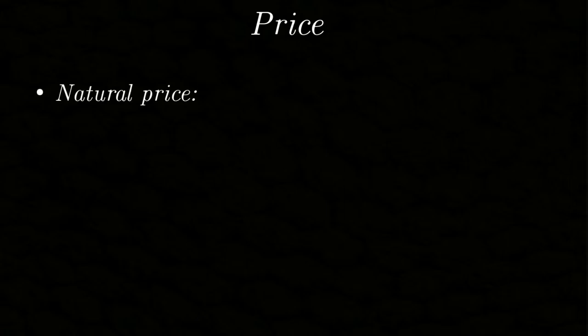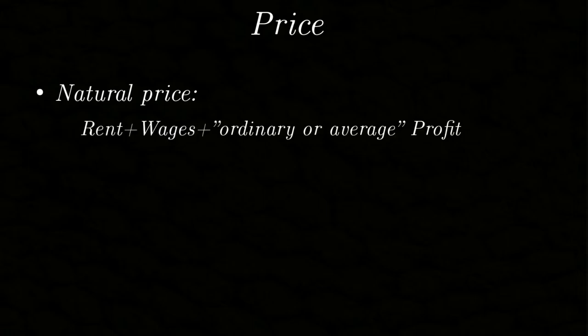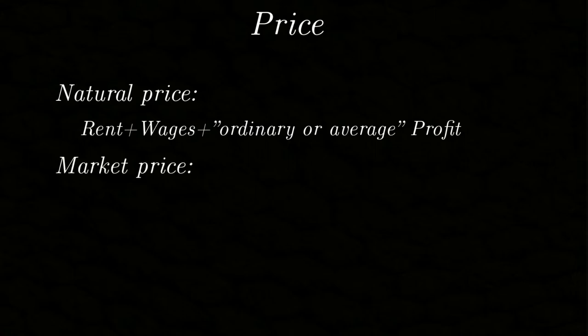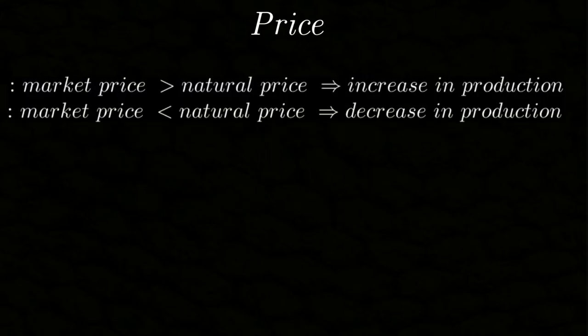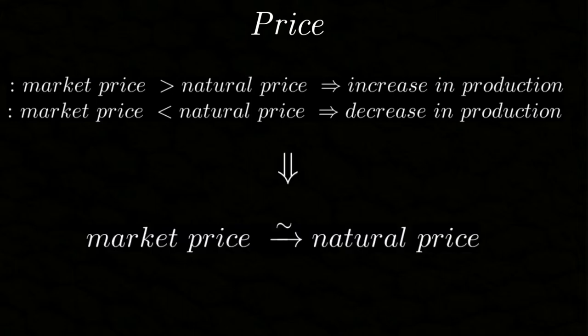Smith distinguishes between two different kinds of prices. Natural price, which decomposes the price of a product into three components: the materials needed, the rent for the working place, the wages of the workers, and an average or ordinary profit. And market price, which is determined by the law of supply and demand. The important point is this: if the market price is larger than the natural price, then a lot of profit is to be made, and it will attract a lot of entrepreneurs who will increase the supply. While if the market price is smaller than the natural price, factories will close down and supply will diminish. So the market price will over time converge towards the natural price. This is the so-called invisible hand.